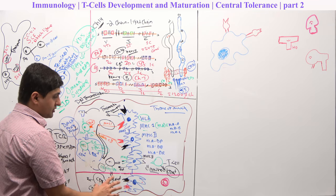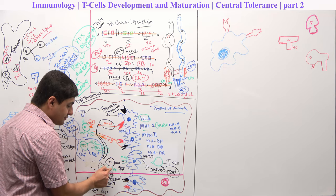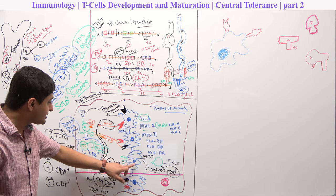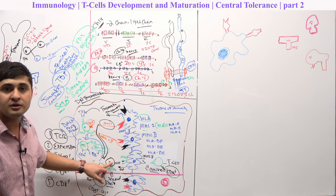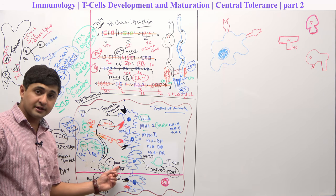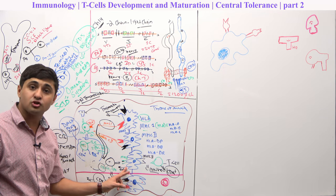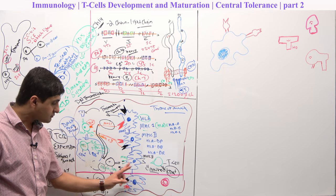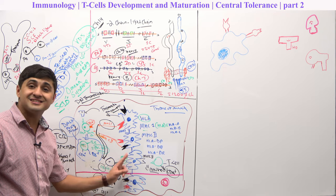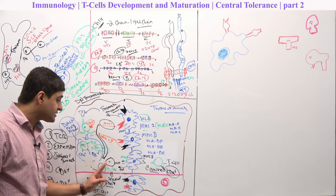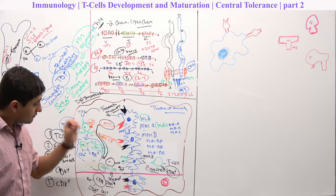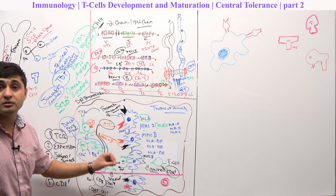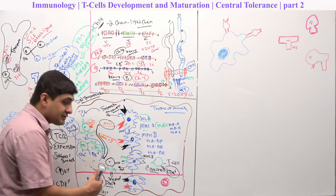Remember: if this double positive thymocyte does not recognize any of the MHC1 or MHC2 complex at all, these cells will also produce a product that kills these cells — that is called negative selection. So in two ways: if T cells strongly bind with the MHC complex — high affinity — the thymic epithelium releases a product to kill the cell. If the T cell does not recognize any MHC complex, they also go through apoptosis. If MHC1 is weakly bound with CD8, they are considered positively selected and can leave.